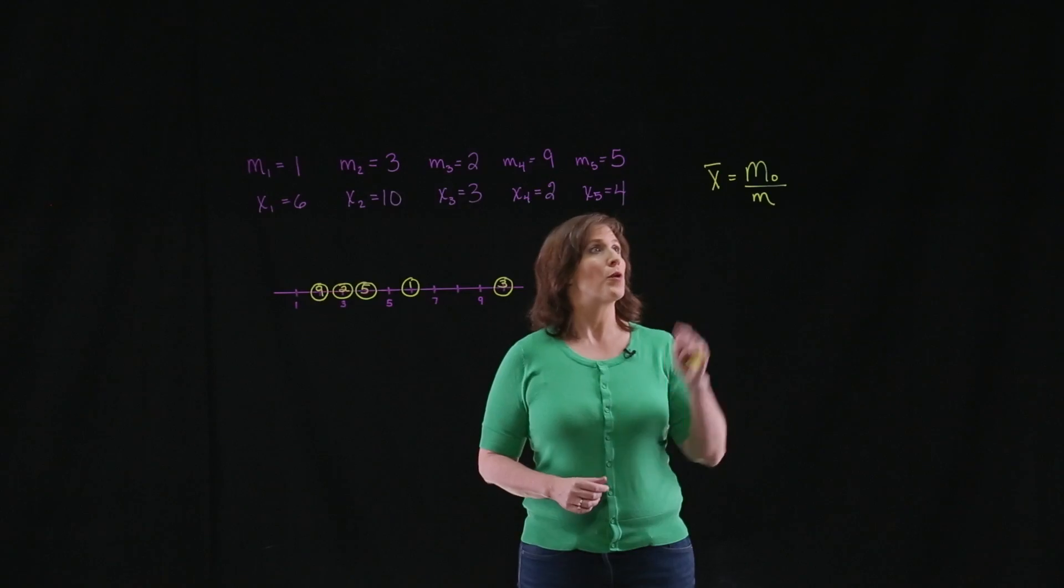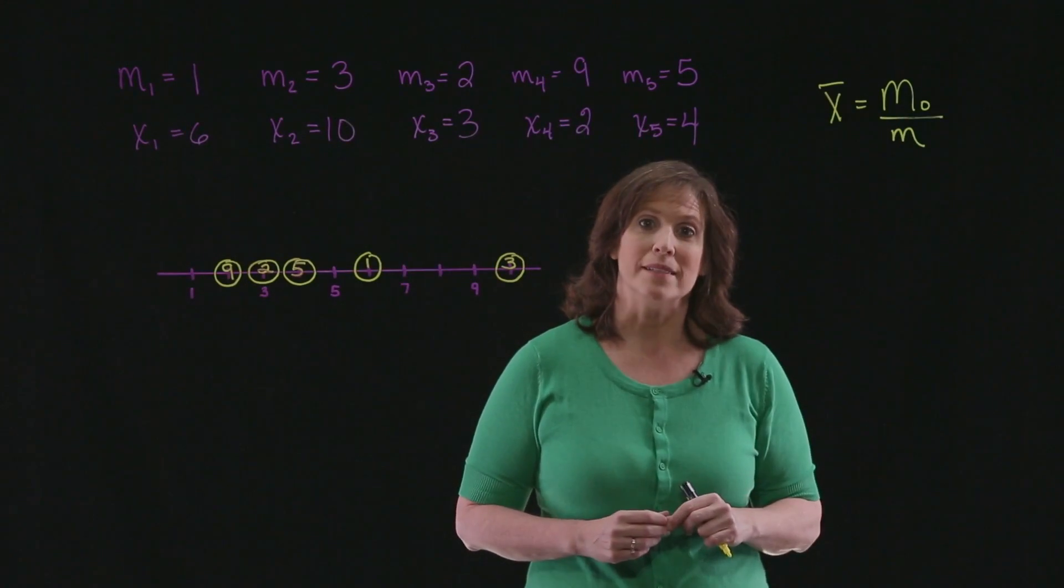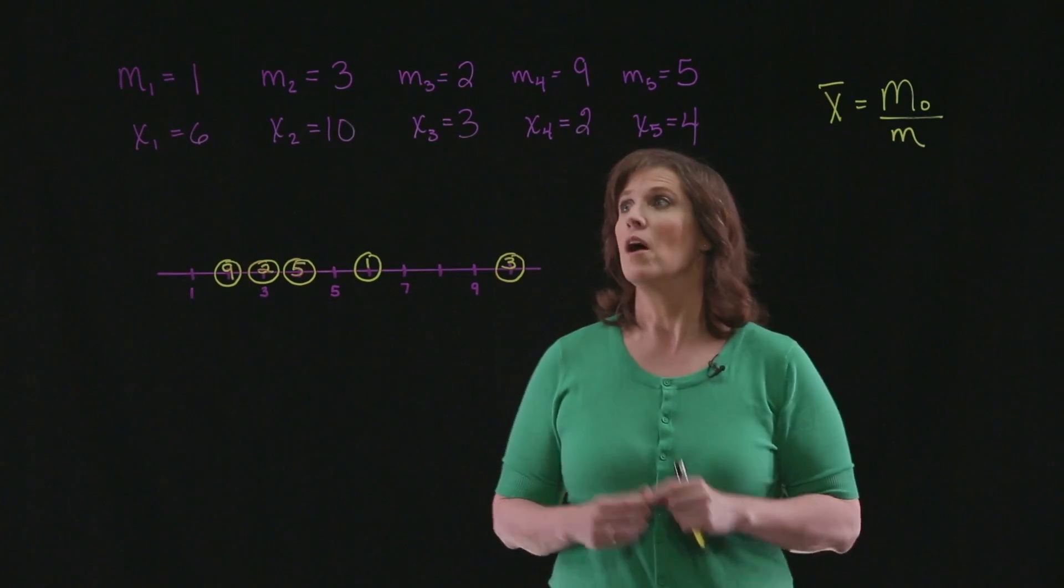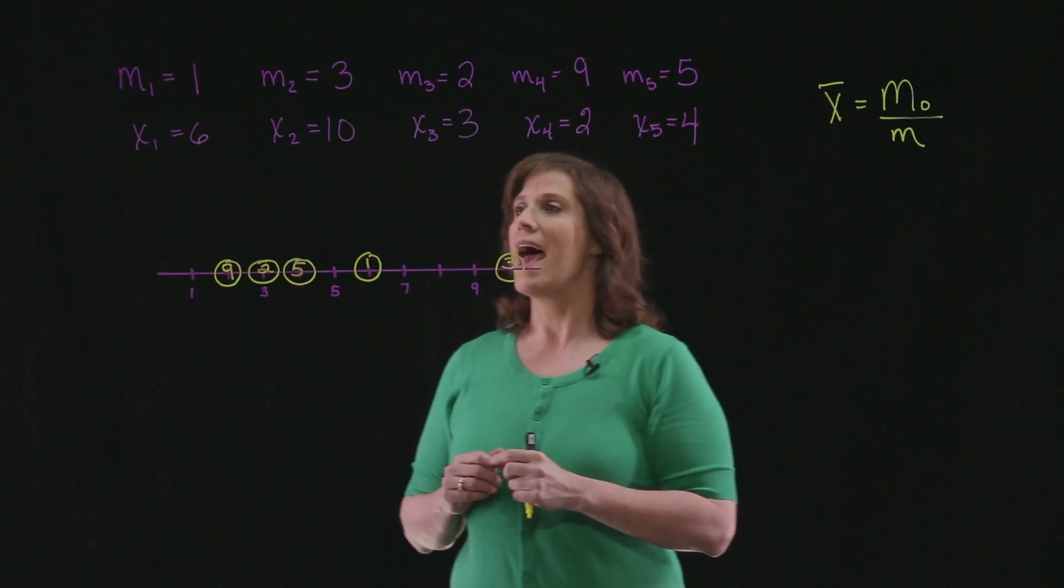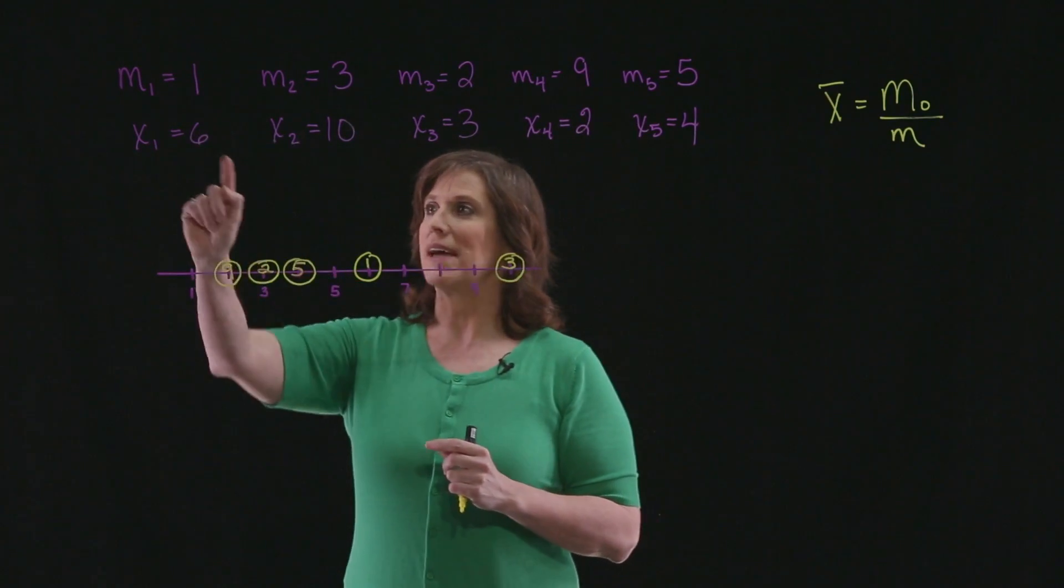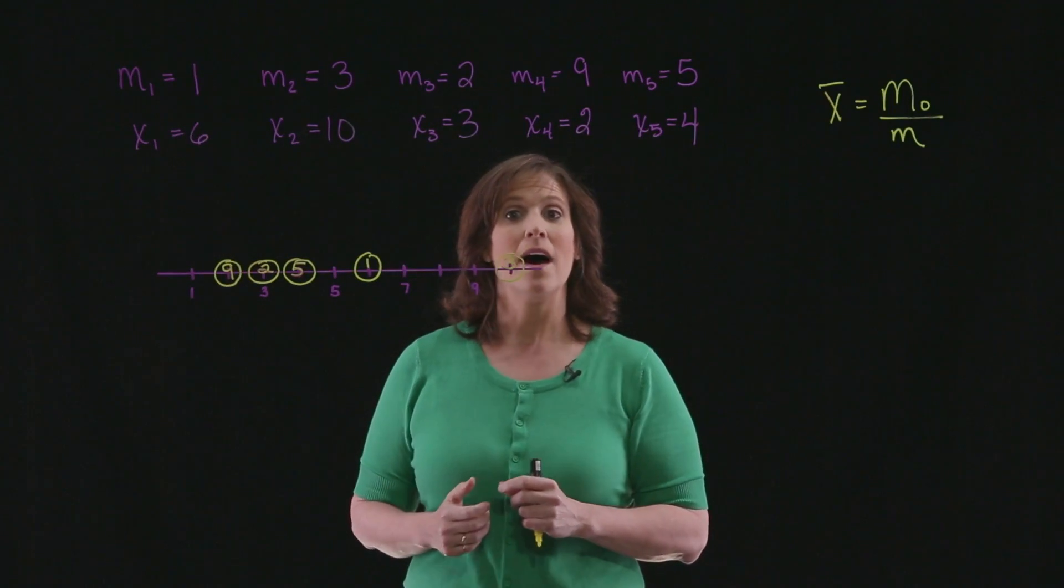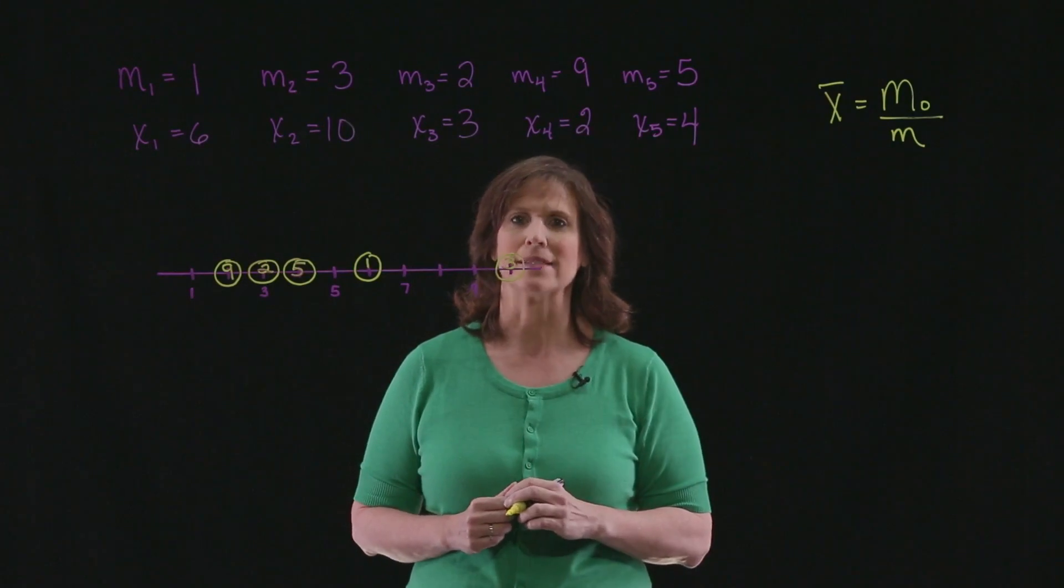To find the center of mass, we're going to find the moment about the origin and divide it by the total mass. Well, I have my system here, and these are giving me my different masses with my directed distances from the origin. So I need to find the moment and the total mass.